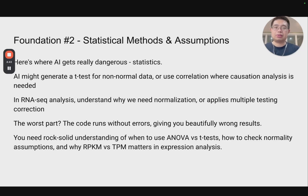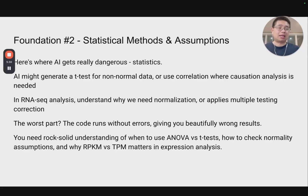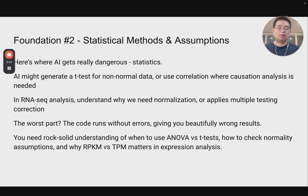Foundation number two: statistics methods and assumptions. This is where AI can get really dangerous. For example, AI may generate a t-test for non-normal data, or use correlation when causation analysis is needed. In RNA-seq analysis, you want to understand why we need normalization, why library size normalization alone is not enough, and why you need variance stabilization normalization — for example, in DESeq2, because large genes with large counts tend to have large variance. You also need to deeply understand why you need to apply multiple testing corrections: when testing thousands of genes at once, you will find significant p-values just by random chance because p-value is a random variable. The dangerous part is that the code can run without errors, giving you beautiful but wrong results.